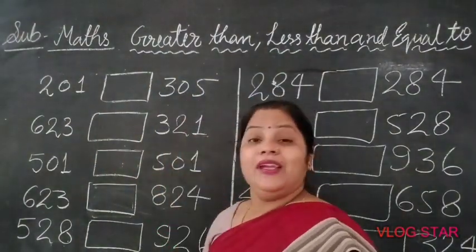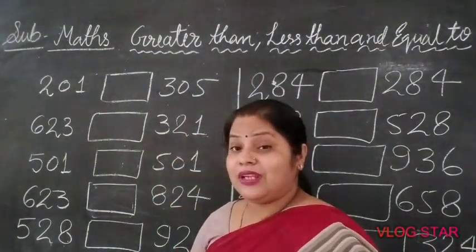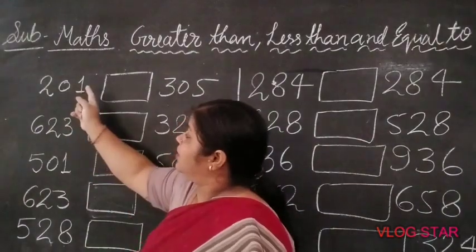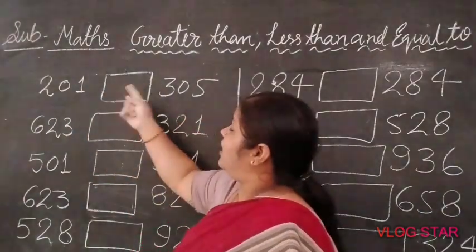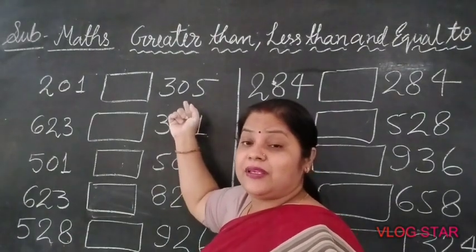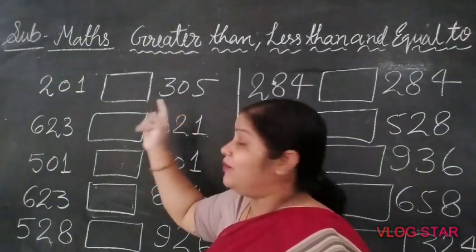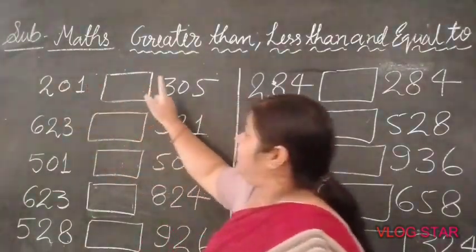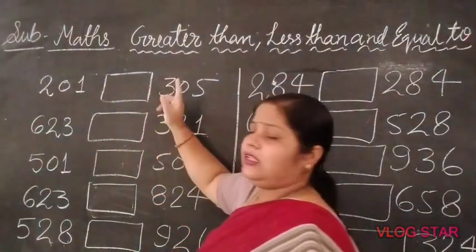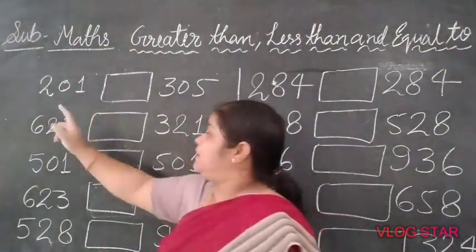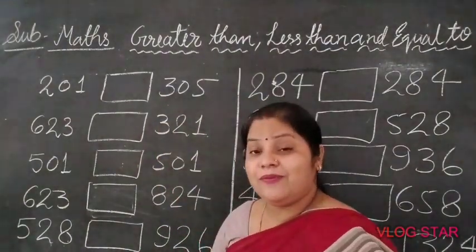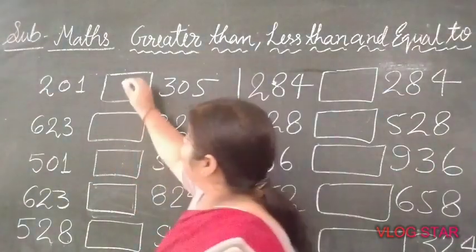205 — which is greater? 2 greater than less than 305. Here the biggest number, the hundreds digit — here 200, and 305 is a bigger number.